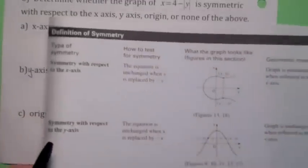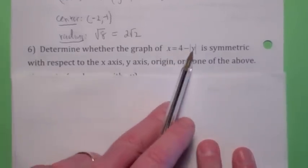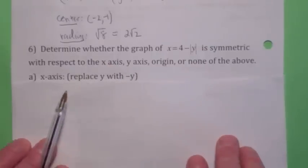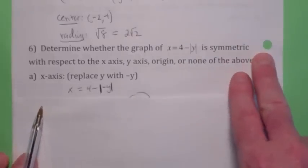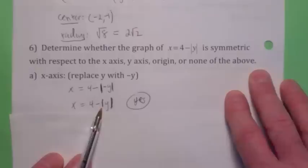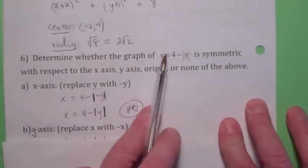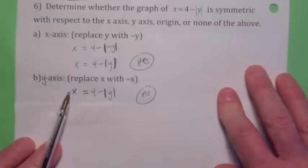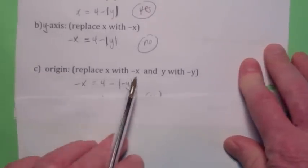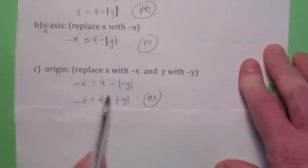The first example: the equation is x equals 4 minus the absolute value of y. Testing x-axis symmetry — replace y with negative y. The absolute value of negative y is just the absolute value of y, so you do get the same equation back. The graph is symmetric with respect to the x-axis. Testing y-axis symmetry — replace x with negative x and you don't get the same equation back, so it's not symmetric with respect to the y-axis. It's not symmetric with respect to the origin either.